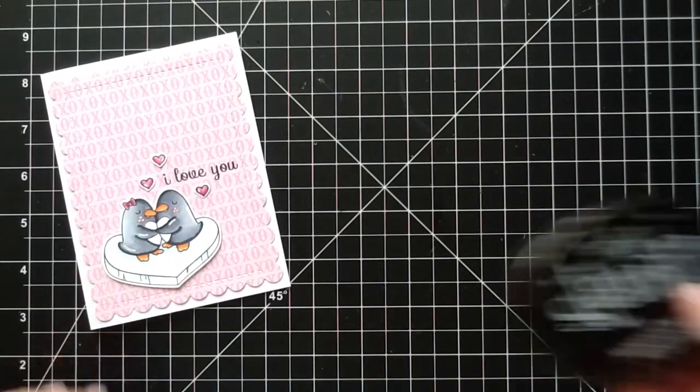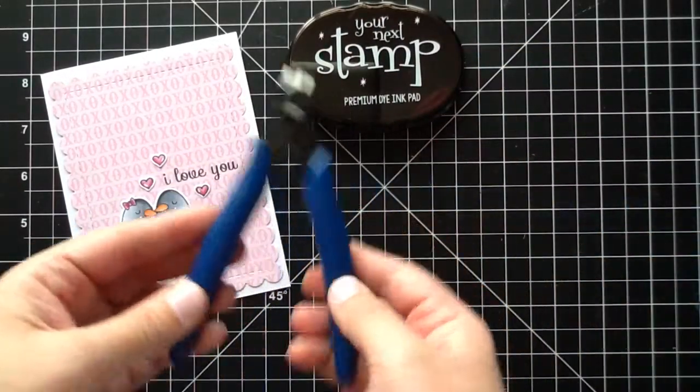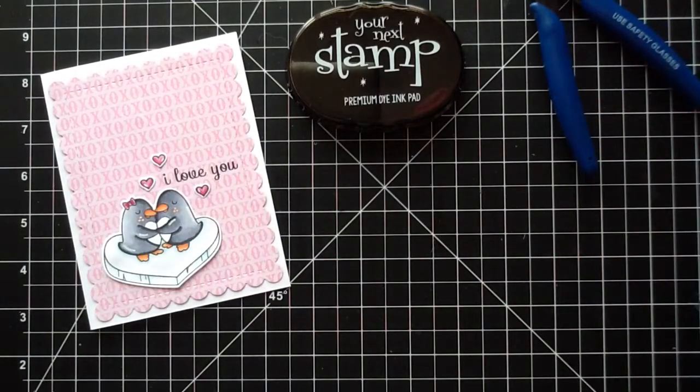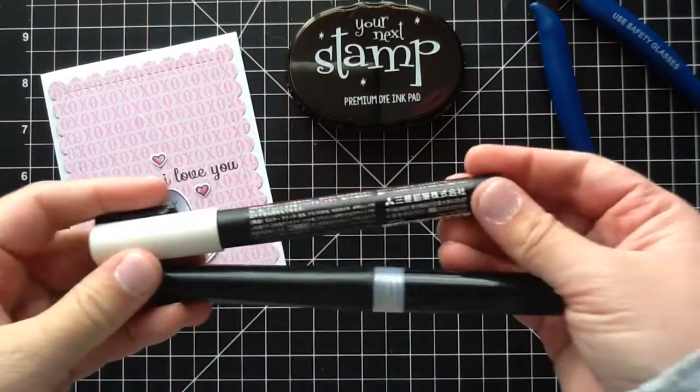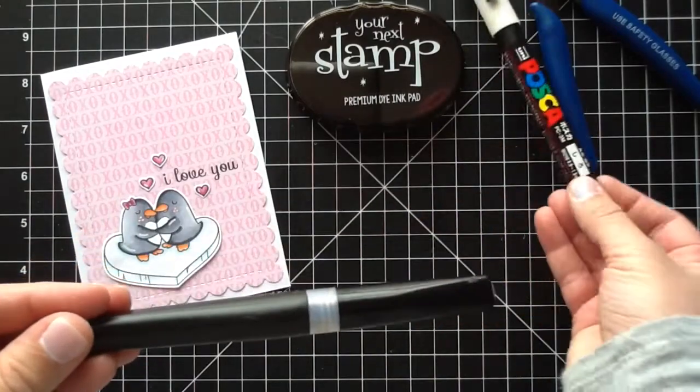I'm going to start by sharing the products I'll be using. I used Your Next Stamp Black Olive Ink, the wire snips, and I'll have all this linked in the description box below. I also use this Posca pen, which I purchased off Amazon.